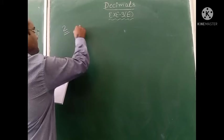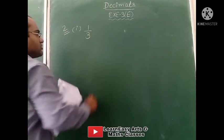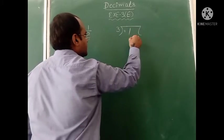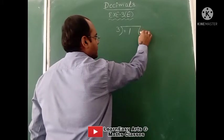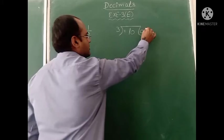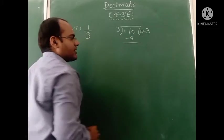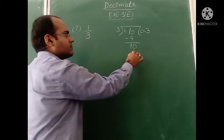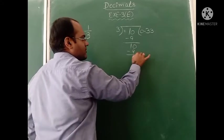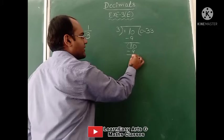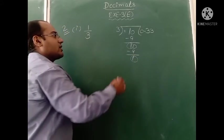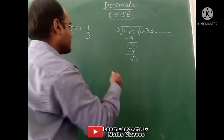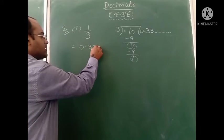First part: 1 upon 3. First we have to show the division. With a table of 3, we divide 1. This 1 is not divisible by 3, so we take a decimal and add 0. 3 times 3 is 9. On subtracting, remainder is 1. Decimal is already in the answer, so we add 0 again. 3 times 3 is 9. Again remainder is 1. So we are getting the same remainder every time. We will write 0.33 and so on.